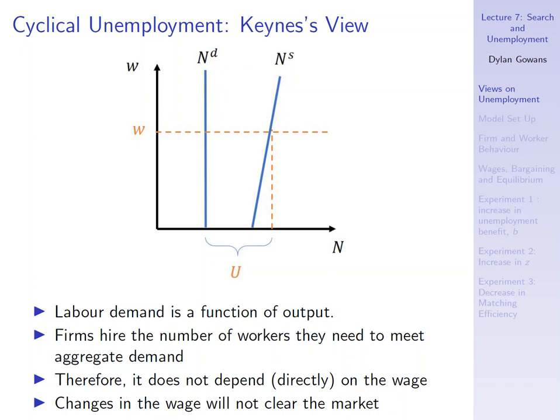Why? Imagine a decrease in the wage — firms see that the marginal product of labor is now greater than the wage. The new classical view says the firm will increase its demand for labor, but Keynes says it doesn't matter: even though you can produce more than you pay the worker, what matters is whether anyone will buy it. If there's no demand for it, it'll just sit in a warehouse — so changes in the wage won't bring about an increase in labor demand, and the wage doesn't clear the market.